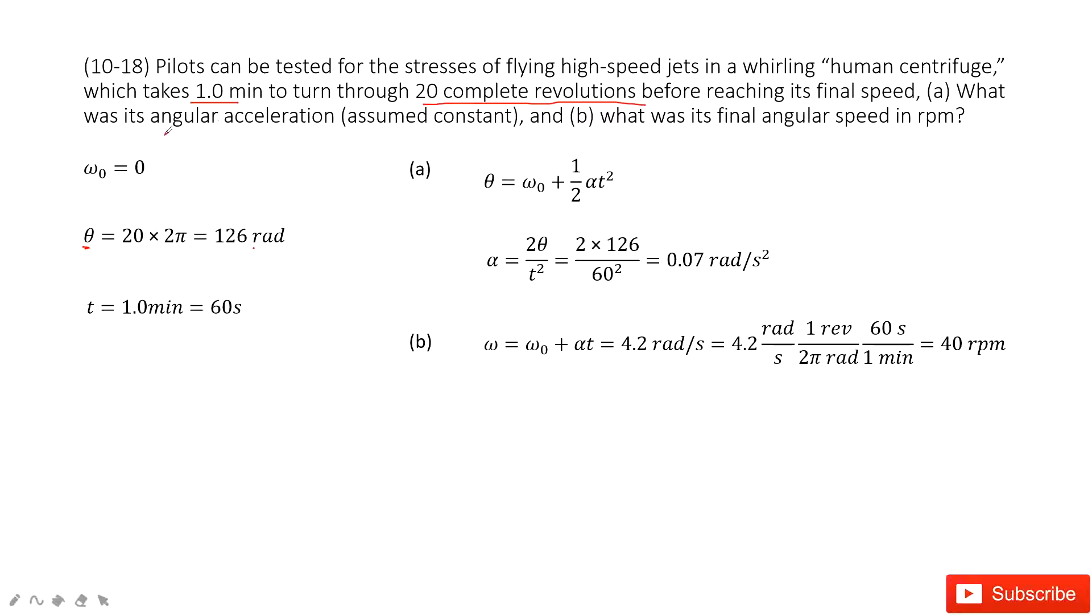First one asks you to find angular acceleration. So for angular acceleration, you can see you know initial angular velocity, you know angle theta, you know t. So we consider this equation. In this equation, this one is zero. This term becomes zero, right? And then you can solve this equation. Find the angular acceleration alpha in this equation. And then input all the known quantities to give the final answer.